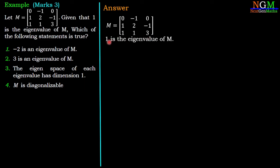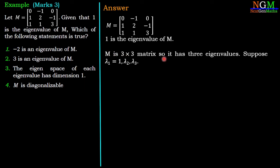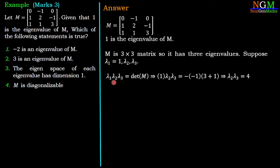We are given that one eigenvalue of matrix M is 1. Since M is a 3×3 matrix, it has three eigenvalues: λ1, λ2, and λ3, where λ1 = 1. Using the property that the product of eigenvalues equals the determinant of M, we get λ2 × λ3 = det(M) = (-1)(-1)(3) + 1 = 4. So λ2 × λ3 = 4.